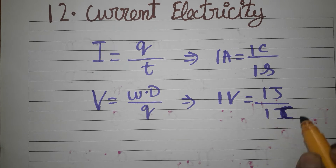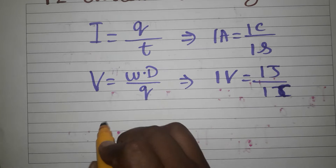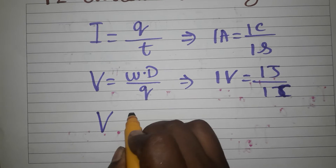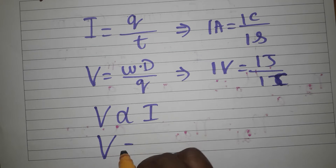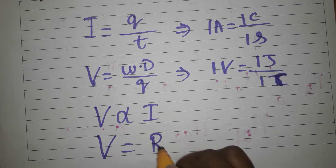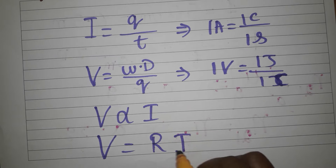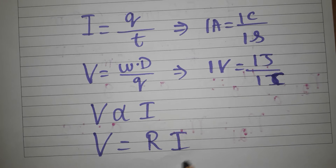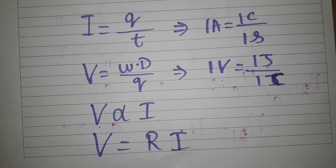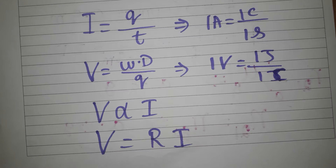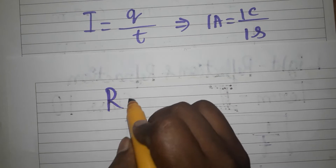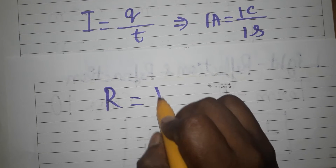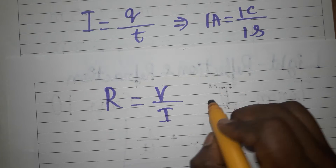According to Ohm's law, V is directly proportional to I, so V is equal to R times I. If you want R, then R is equal to V divided by I.